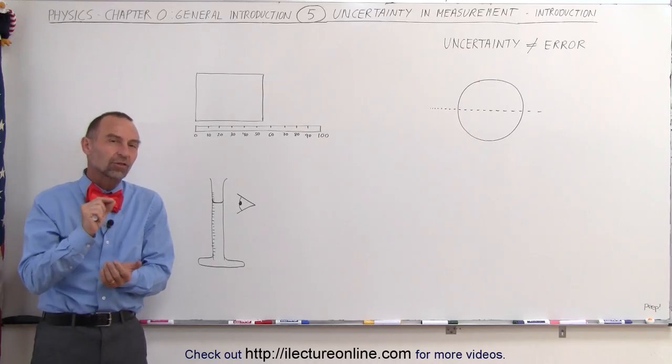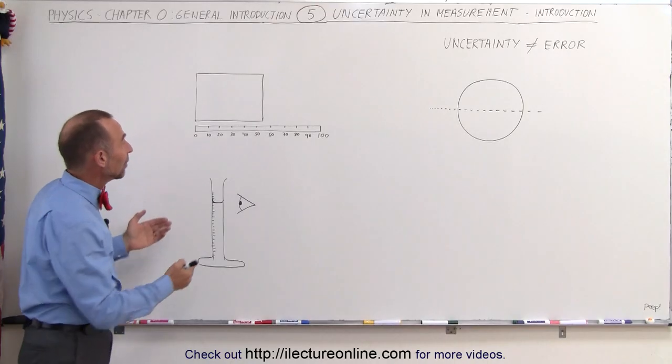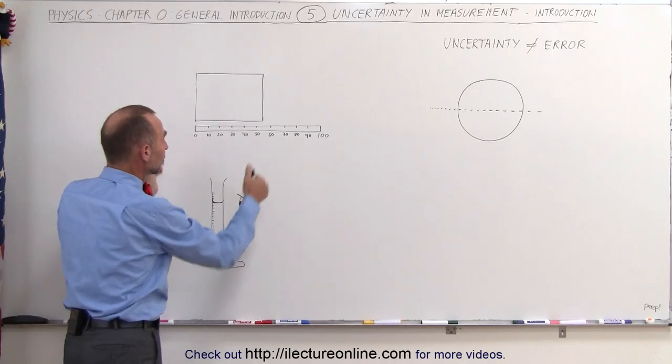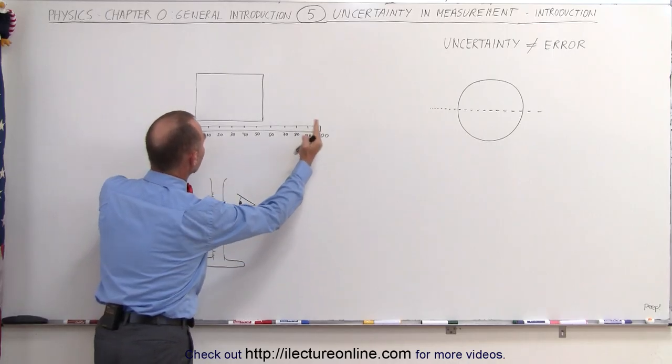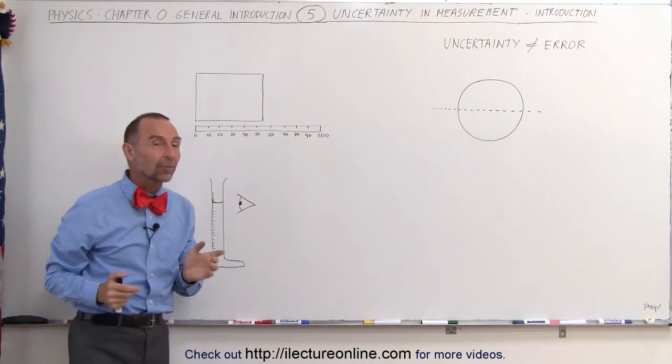There's always going to be some uncertainty in the value that we write down. For example, let's say we have an object that we want to measure the length and the width of. We have a meter stick and we put our meter stick next to the object and we're trying to figure out exactly how big that object is.